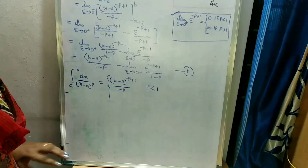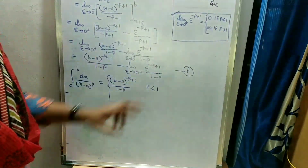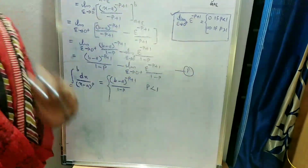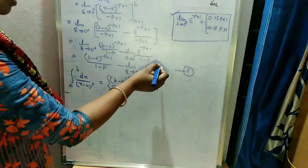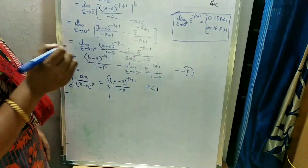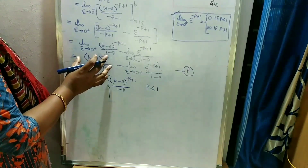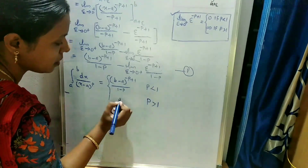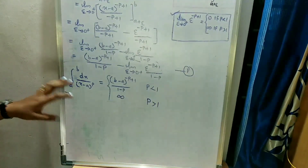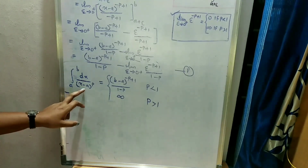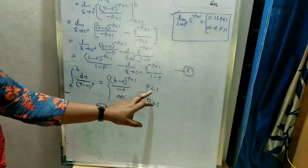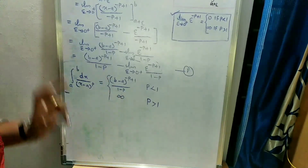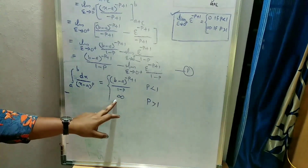When p greater than 1, the limit of epsilon^(1 minus p) is infinity. Therefore that term is infinity, and subtracting infinity gives infinity overall. So if p greater than 1 the integral value is infinity, meaning the integral diverges when p greater than 1.